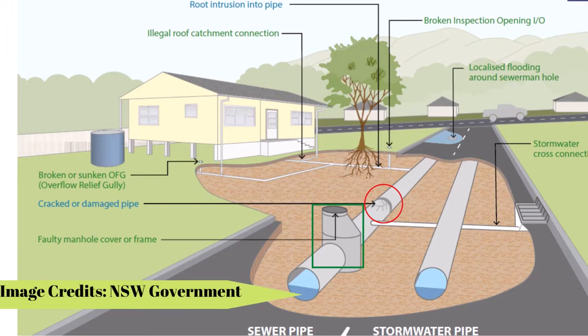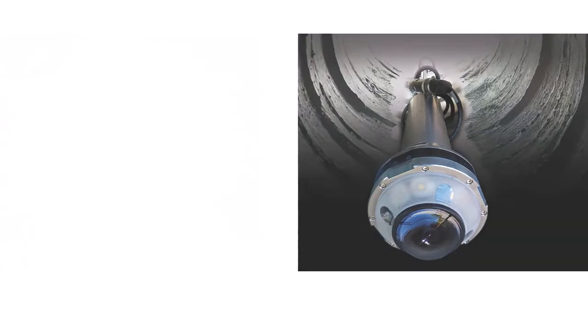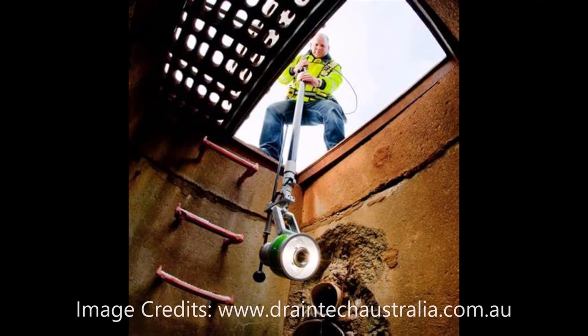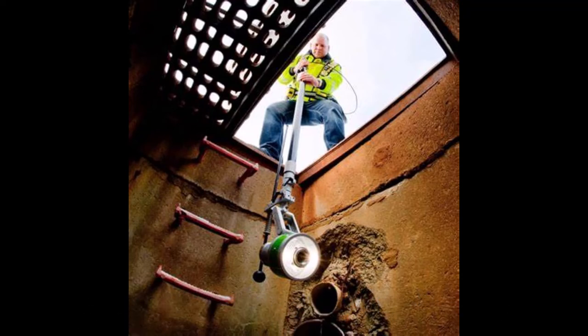Initially, manholes were built to provide humans with access to pipes and other underground assets. Now, their modern use is to employ equipment like inspection cameras in the manhole to gather CCTV footage, so that cleaning and maintenance can be done without the need for any personal entry.